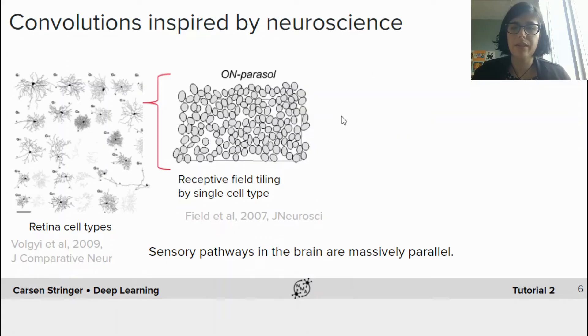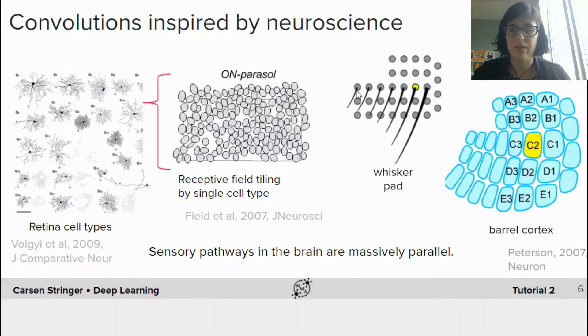And then similarly in barrel cortex of mice, this corresponds to the area of the brain that activates when whiskers are moved or hit objects. There's this similarly parallel structure where each whisker activates a certain part of barrel cortex. And there's thought to be similar filters in each of these different barrels.